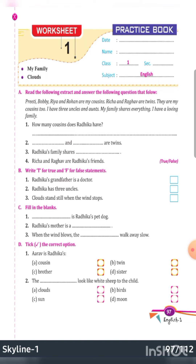Number three: write T for true and F for false. Radhika's grandfather is a doctor — it is not given in this paragraph, it is from the chapter only, so false. Radhika has three uncles — yes, true, it is given in this paragraph. Cloud stands still when the wind stops — yes, true. So the answers are F, T, and T.